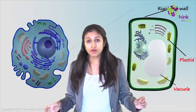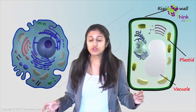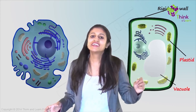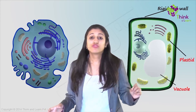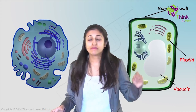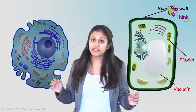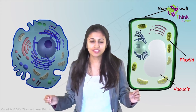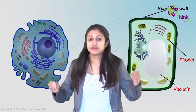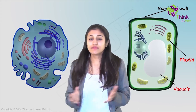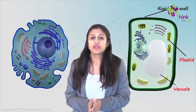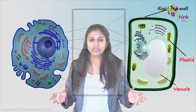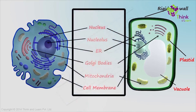Plastids are important in giving color to the plant. More importantly, they are for photosynthesis — the magic process of photosynthesis — and animal cells do not have plastids. These are the three main differences between the two. Other organelles you can name are all essentially the same and they all have similar functions.